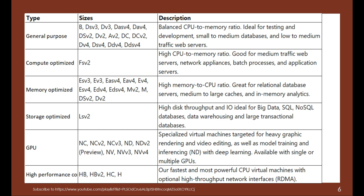For memory optimized VMs — ESv3, Ev3, and so forth — you get a high memory-to-CPU ratio, which is great for relational database servers, medium-to-large caches, and in-memory analytics like data science. We are going to cover those topics in coming sessions. For storage optimized, the LSv2 series has high disk throughput and high IOPS, ideal for big data, SQL and NoSQL databases, data warehousing, and large transactional databases.